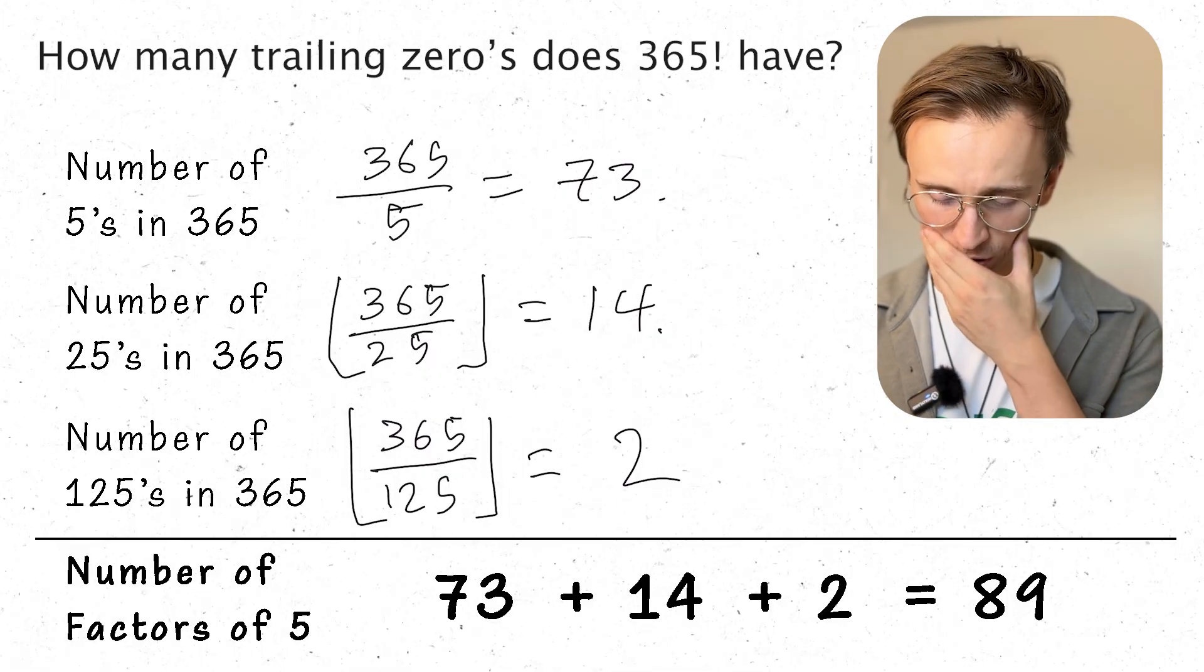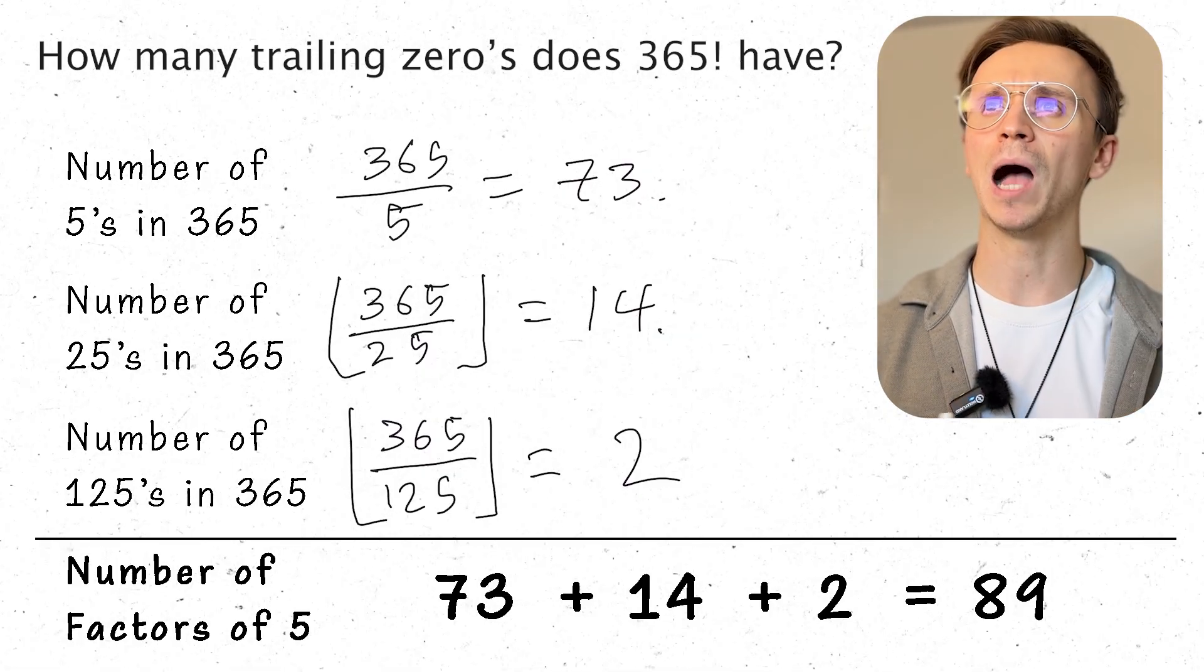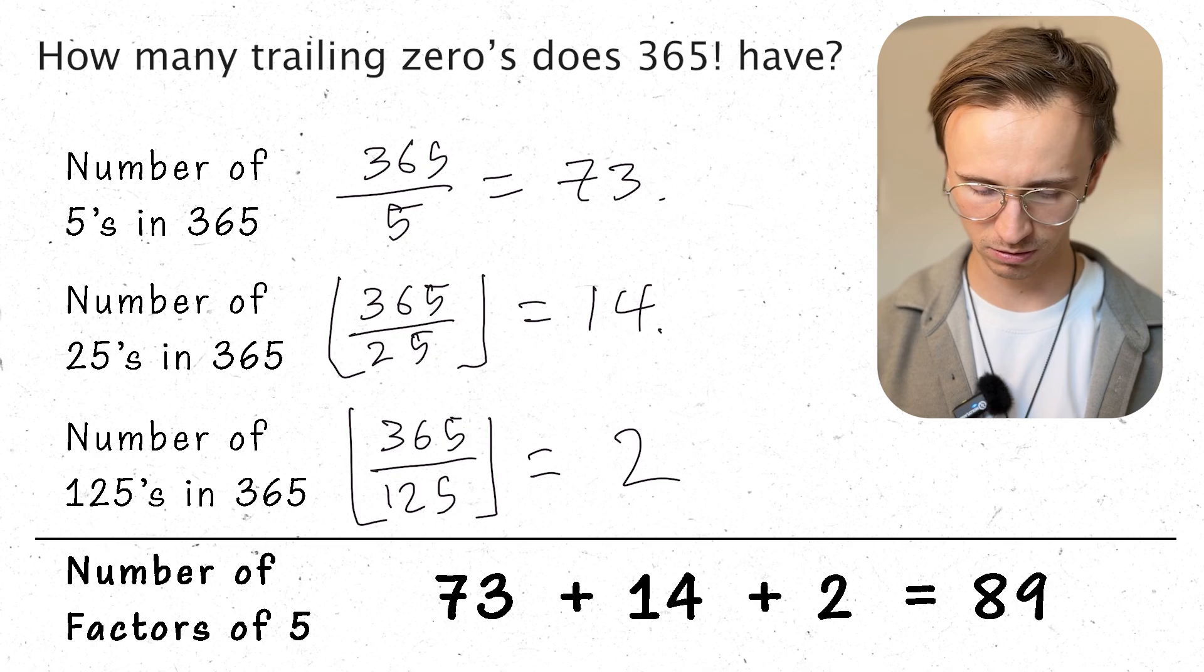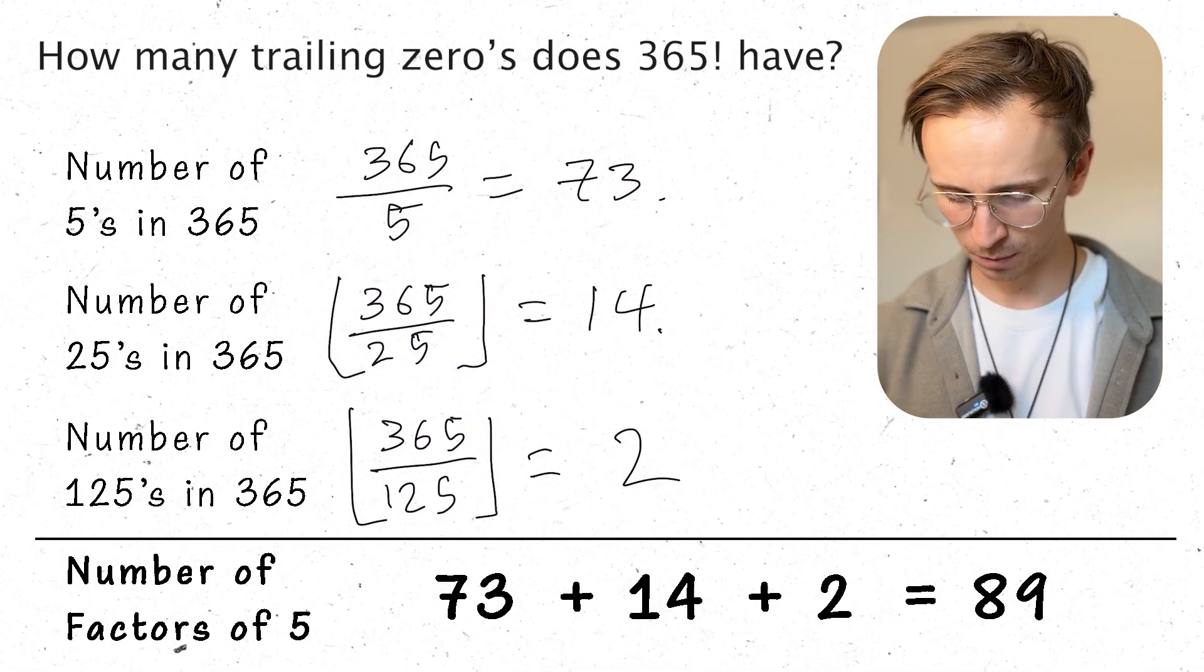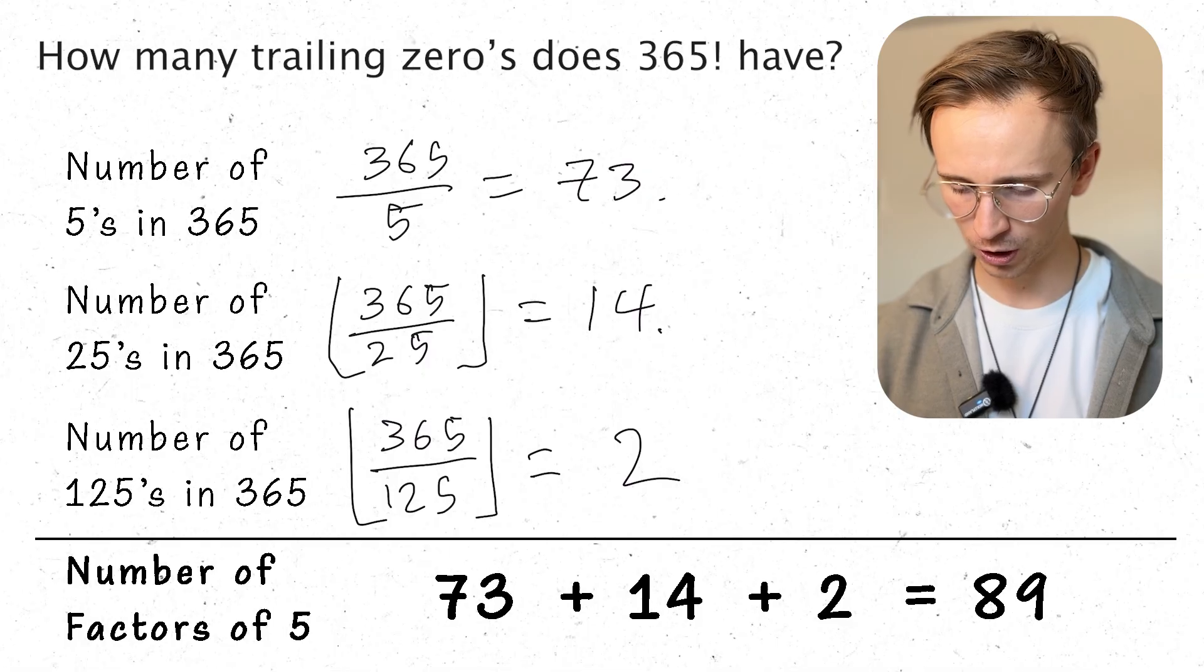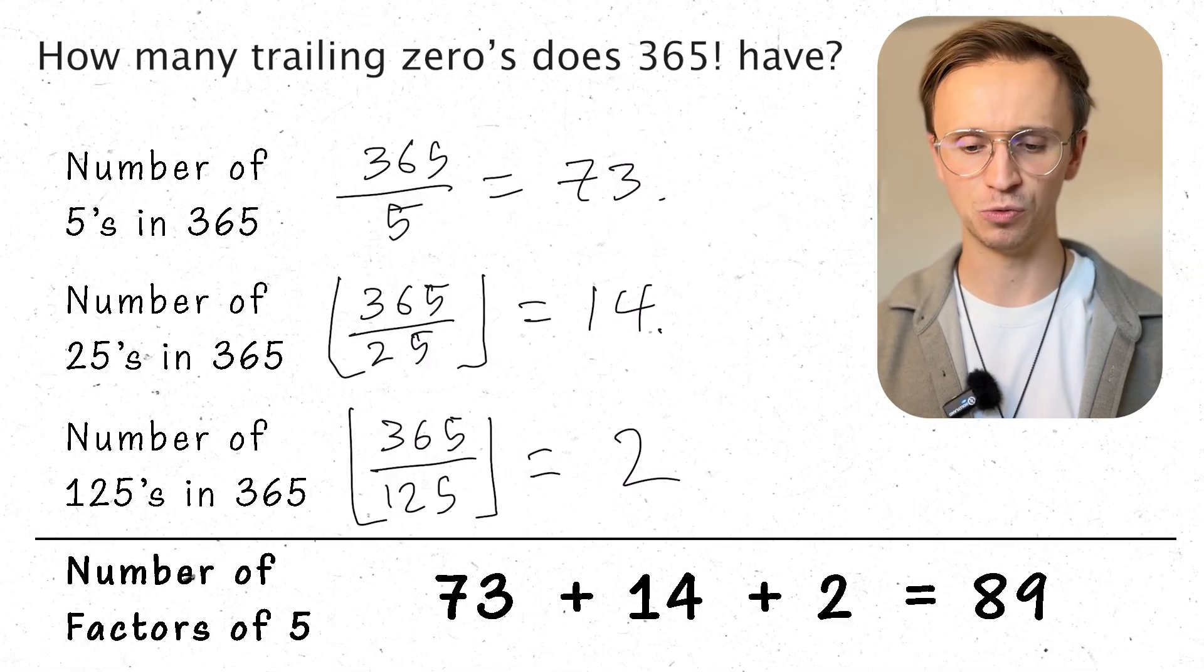Okay, so I've got 89 5s. I'm definitely going to have enough 2s because you've got loads: 2, 4, 6, 8. You've got hundreds of them. Yeah, so 5 times 2 would give me the 10.